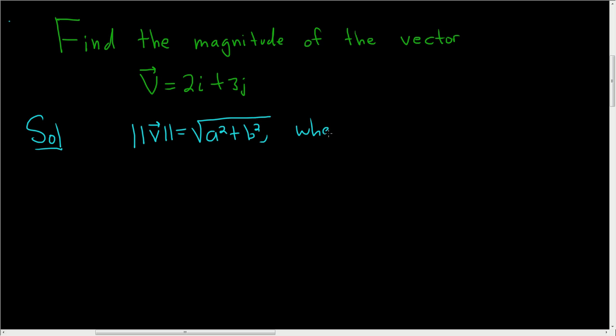Where v is equal to the vector whose first component is a and its second component is b. So in this problem, we can write this vector in component form as 2, 3, and then just use the formula.